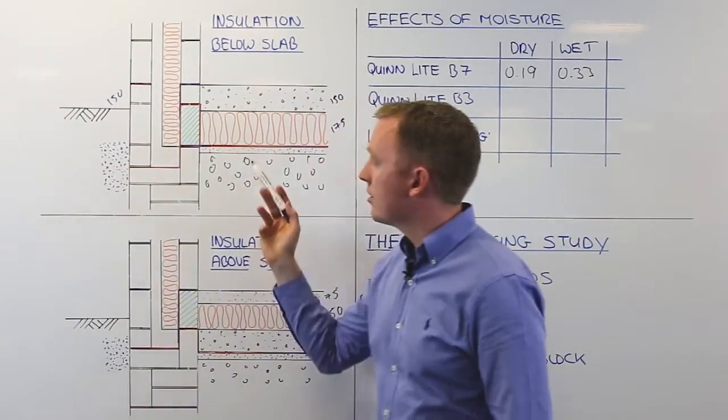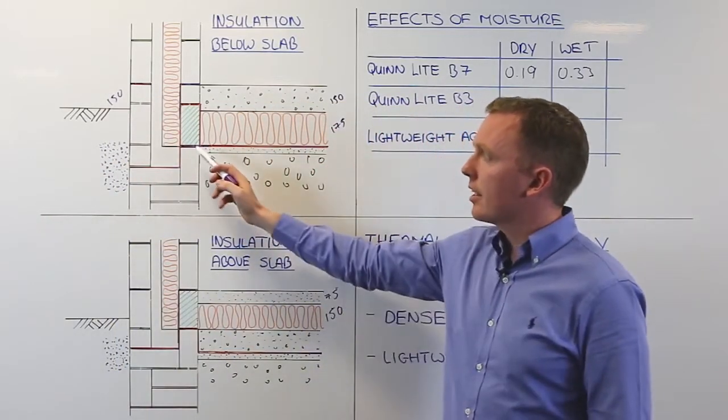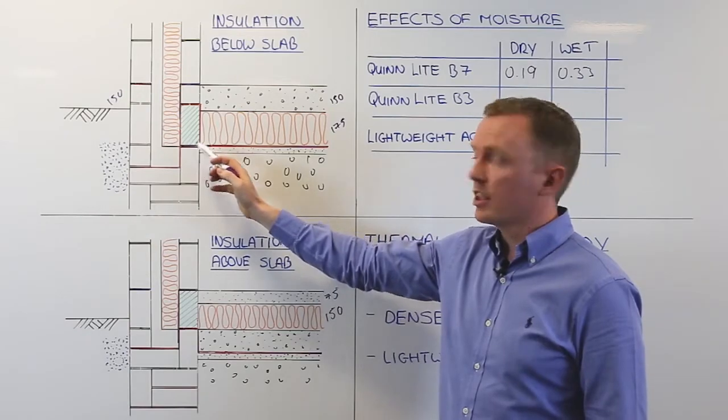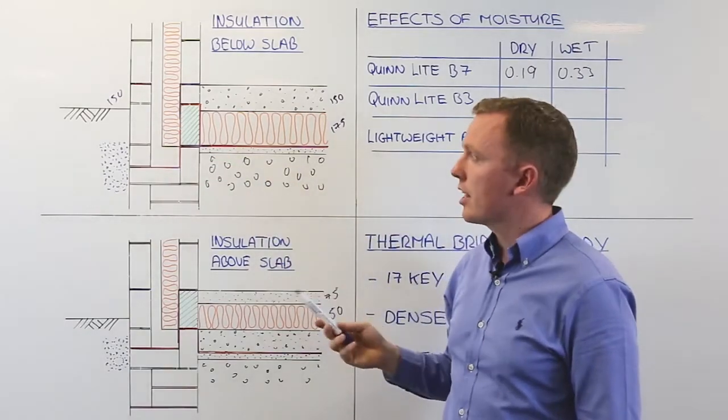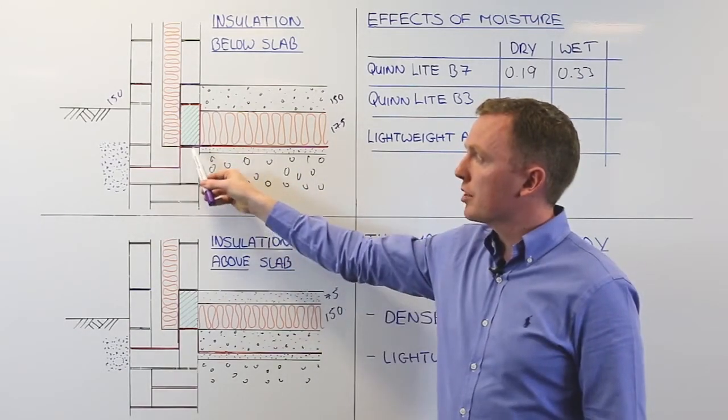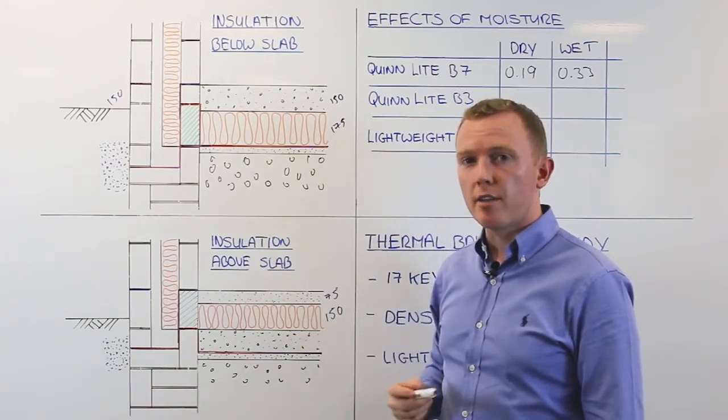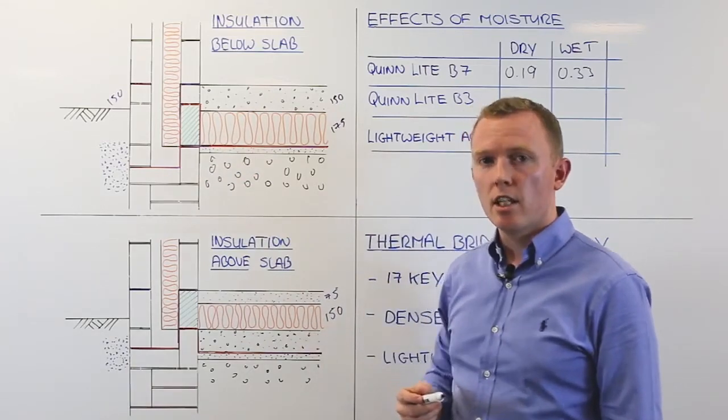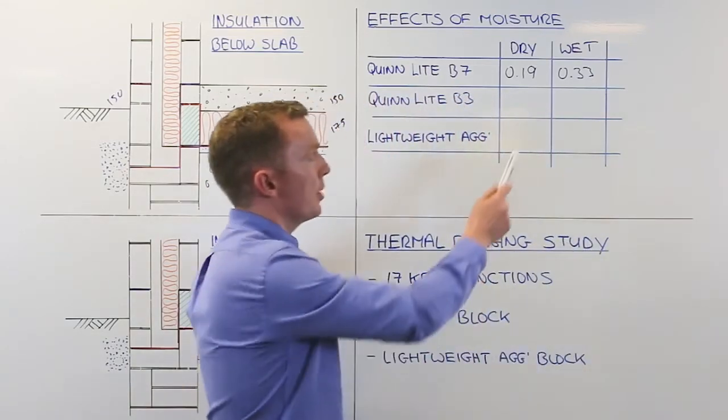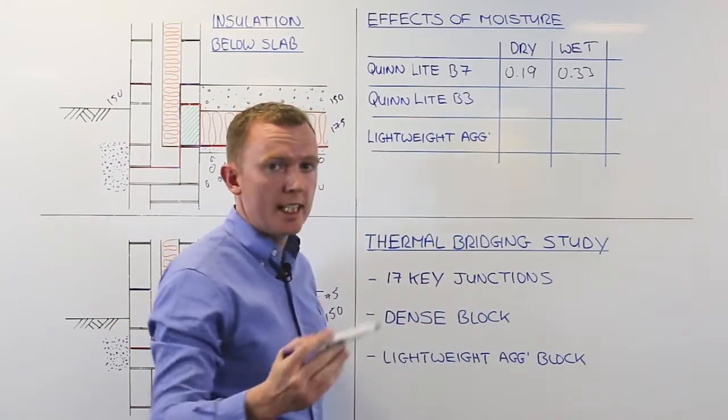And if we look at this detail here, even if that DPC wasn't in there, which is an incorrect detail, but if it wasn't there, the block is only subject to rising damp. So that block will never get close to full saturation. So these figures here are based on full saturation, which really is worst case.